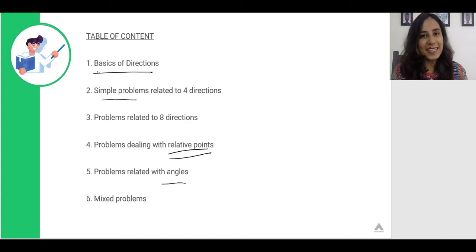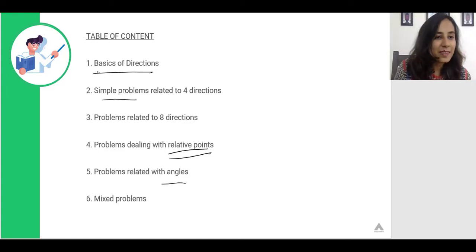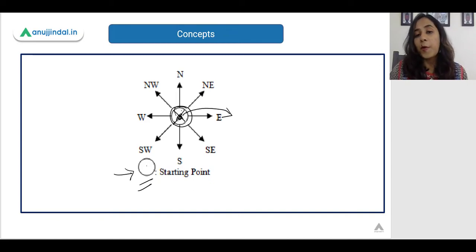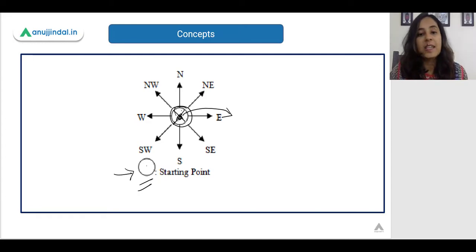So with this introduction, let us start with the concept. Now these are the eight directions. Here you can see this is my starting point. Please pay attention to this cursor. Anything that is to the right of my starting point is the East direction. Something that is to the left is called as the West direction. To the upper side is my North direction and to the lower side is my South direction.